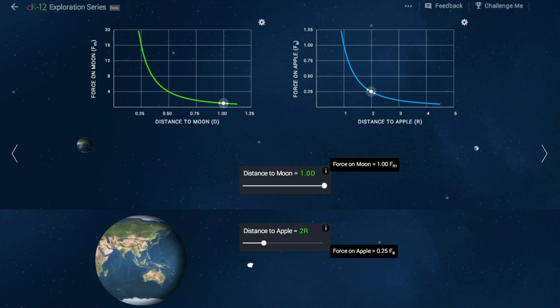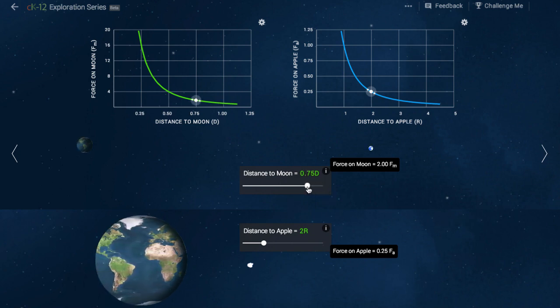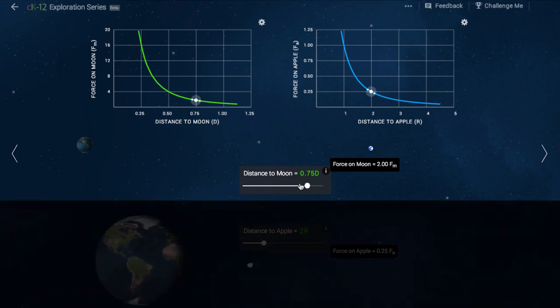With this line of reasoning, he discovered the inverse square law for gravity. Notice that as we move the moon closer to the earth, the force of gravity acting on it gets stronger. If we make the distance half as much, the force goes up by four.